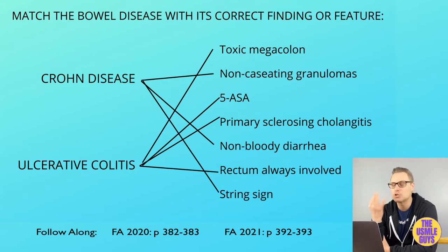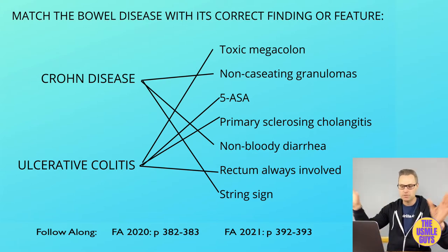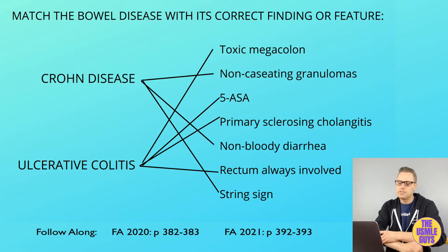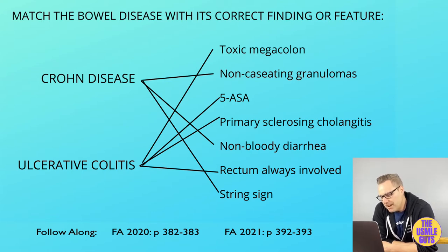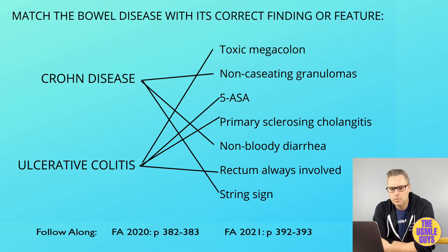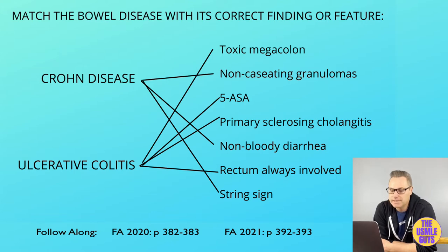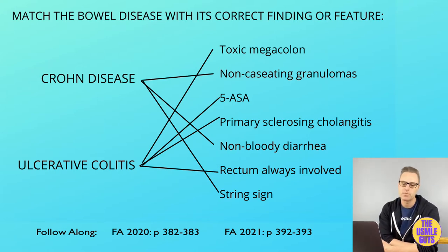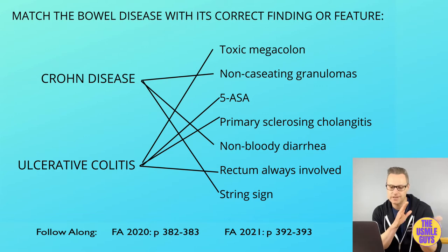Common exam questions involve extra-intestinal manifestations. Crohn's disease is associated with kidney stones and gallstones, and may be positive for ASCA antibodies. Ulcerative colitis is classically associated with primary sclerosing cholangitis, which is linked to MPO-ANCA and P-ANCA — something they might include in a vignette.